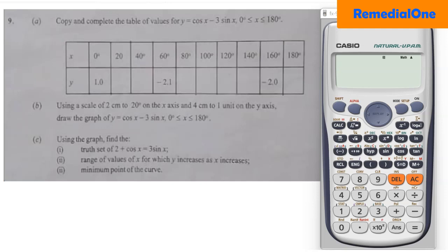Welcome once more to Remedia One YouTube channel. Today we are looking at the 2022 roadmap question number nine, which is the trigonometric graph. We are giving you all the secrets, the hints, and the short way to get your maximum points. You have been given a table they wanted you to copy and complete, then draw the graph and use it to answer some questions.